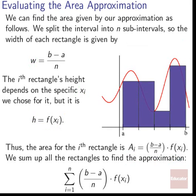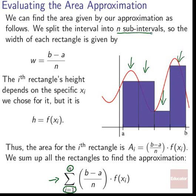To find the total approximation, we add up all the rectangles using sigma notation: the sum from i=1 to n of (b−a)/n times f(xi). That's the width of each rectangle times its height, summed across all n rectangles.